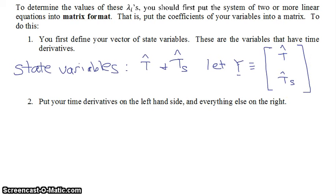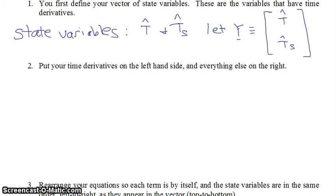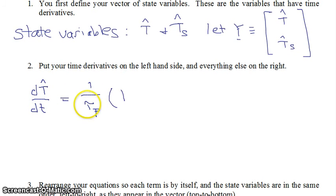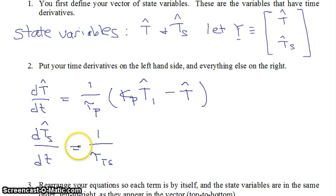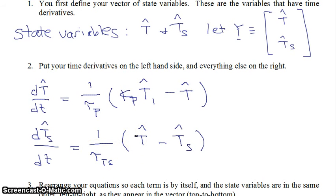Next, we write our system of differential equations with the time derivatives on the left-hand side and everything else on the right-hand side. The first differential equation is: d T-hat / dt equals (1 / tau_P) times K_P times T-hat-1, minus T-hat. The second differential equation is: d T-sensor-hat / dt equals (1 / tau_sensor) times (T-hat minus T-sensor-hat). These are the two state variables because T-hat and T-sensor-hat are the variables we have time derivatives for. Note that the equations are written in the same order as the vector of state variables.